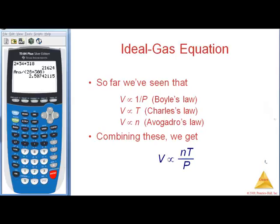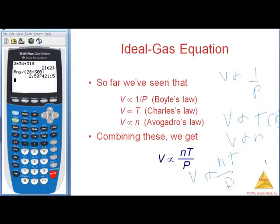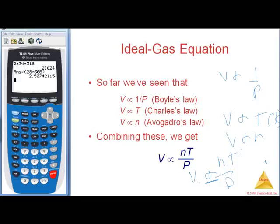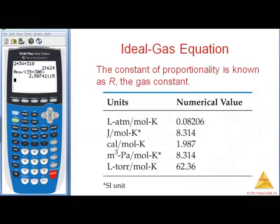We're going to talk about the ideal gas laws. We've seen that there's a relationship between volume and pressure — volume is directly proportional to 1 over pressure. Volume is directly proportional to temperature, assuming Kelvin. Volume is directly proportional to the number of moles. If I combine all these, I get NT over P is directly proportional to V. To replace this proportionality, I need a constant — that's my ideal gas constant.